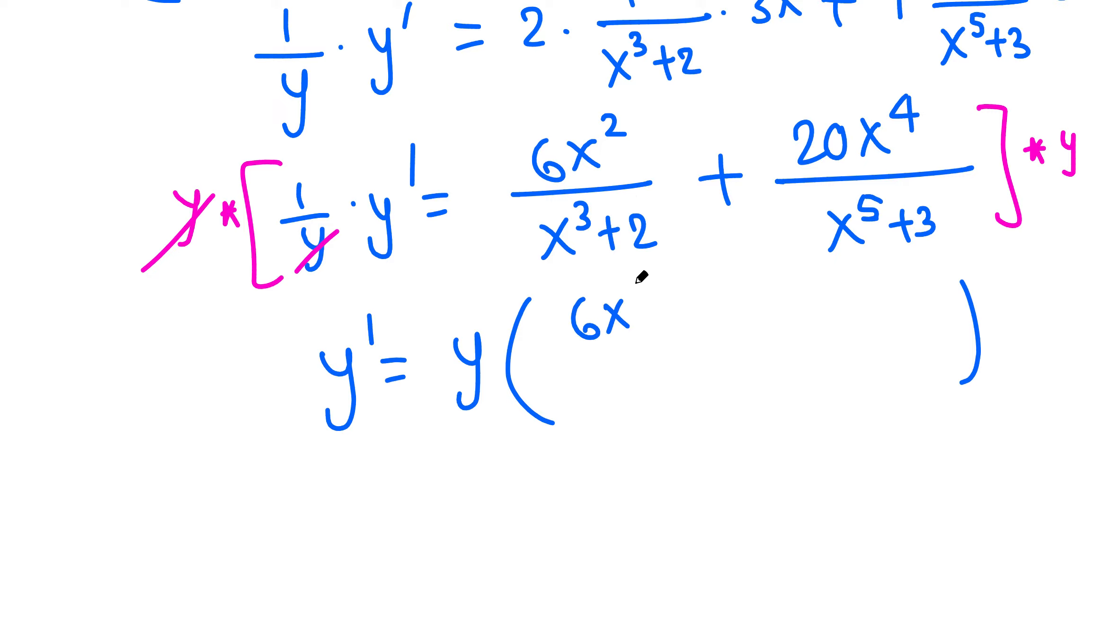Which is 6x² over (x³ + 2) plus 20x⁴ over (x⁵ + 3).